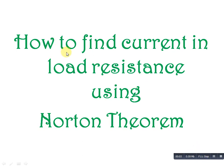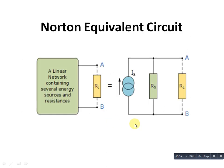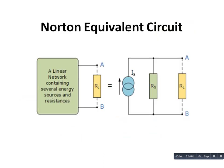Hello friends, in this video we are going to discuss how to find current in load resistance using Norton's theorem. Norton's theorem states: any linear circuit containing several energy sources and resistances can be replaced by a single constant current generator in parallel with a single resistance. This linear network contains several energy sources — current sources or voltage sources — and is directly connected to the load resistance RL.